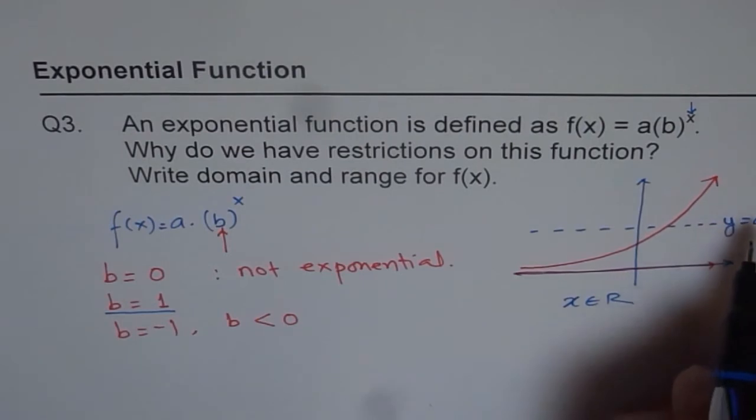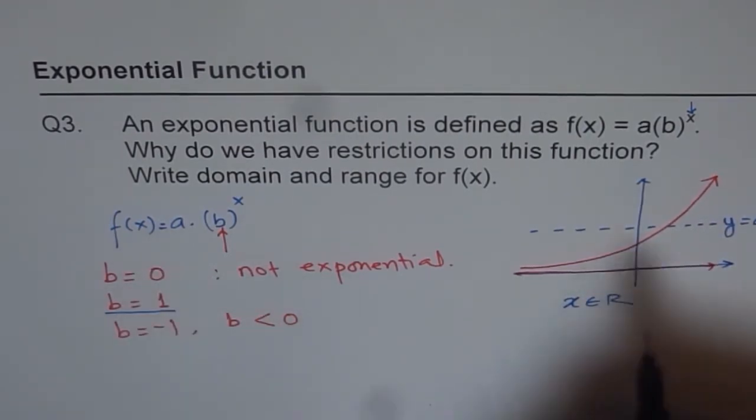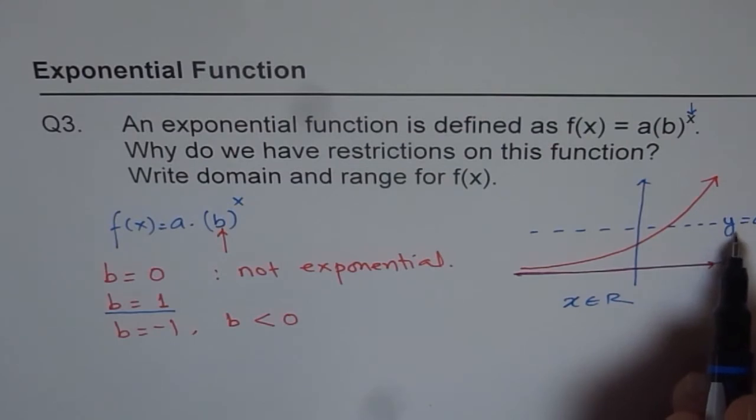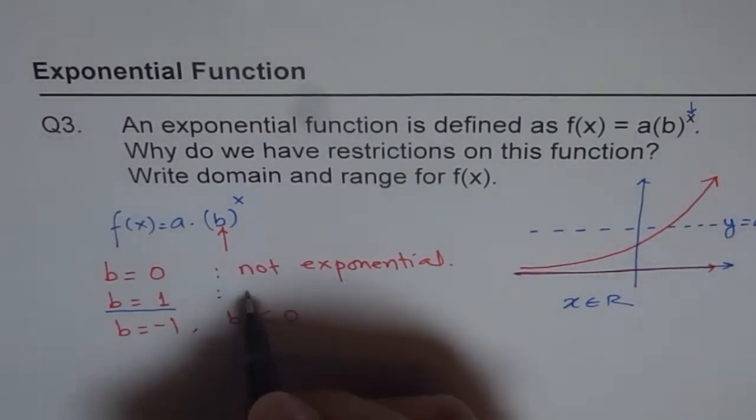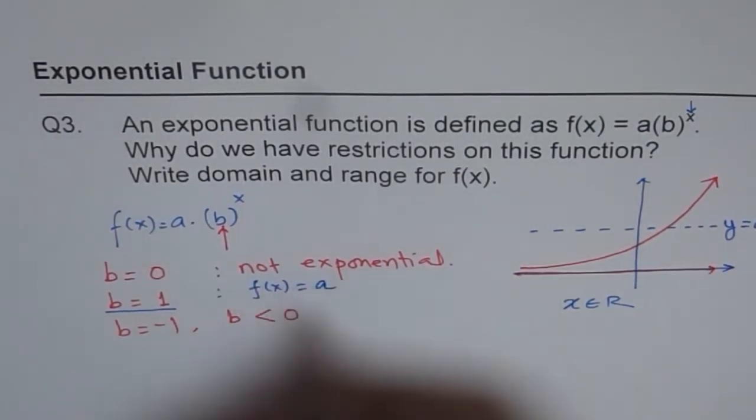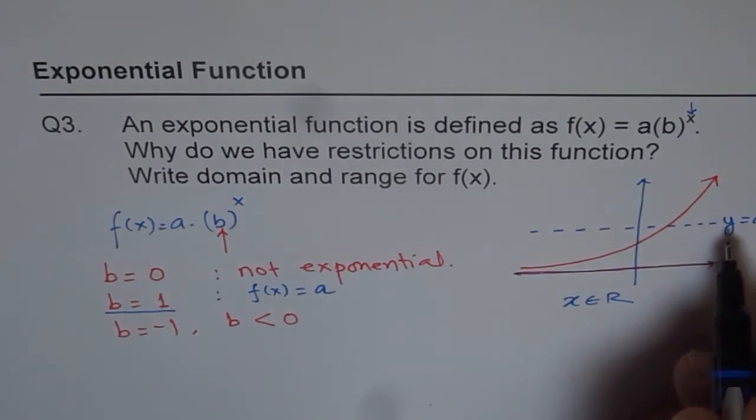And this line will be equal to y equals to a. It is kind of interesting. I have not drawn the line at 1. a could be any number. So this line will be y equals to a. Remember that. So b equals to 1 will give us f of x equals to a. That is also not an exponential function. It is not increasing at all. It is a constant.